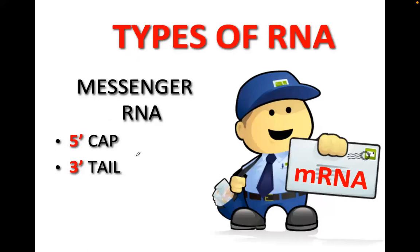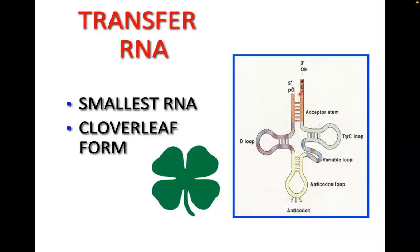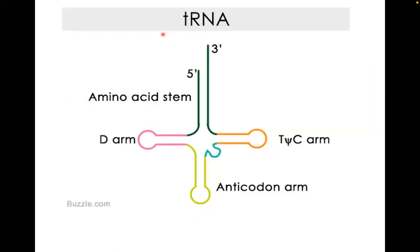Characteristics of messenger RNA: it has a 5 prime cap and a 3 prime tail — like a mailman wearing a cap with a tail, carrying the message. The transfer RNA (tRNA) is tiny, the smallest of the RNAs, and has the famous cloverleaf appearance.